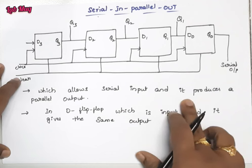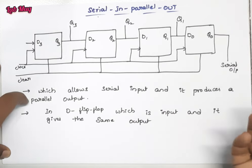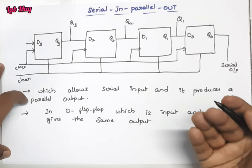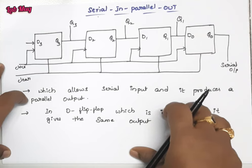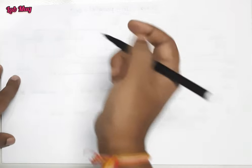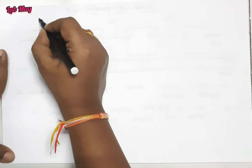It allows the serial input and produces a parallel output. We use D flip-flops. Whatever input we pass, that output we get. We use D flip-flops because they are easy. So I'll take an example now, the truth table.